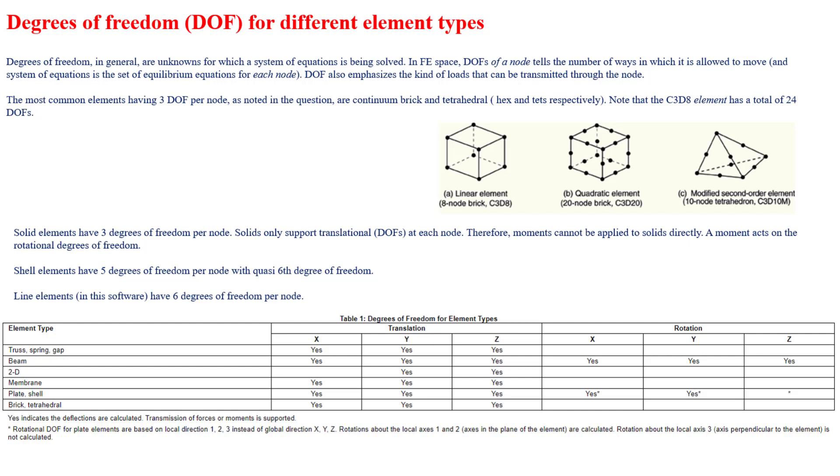Let's say I consider a hexahedron in space - what ways can it move? It can translate along XYZ and rotate along XYZ. For 3D elements, we have 3 degrees of freedom per node because these solids only support translation along XYZ, not rotation. When it comes to shell elements, they have 6 degrees of freedom.